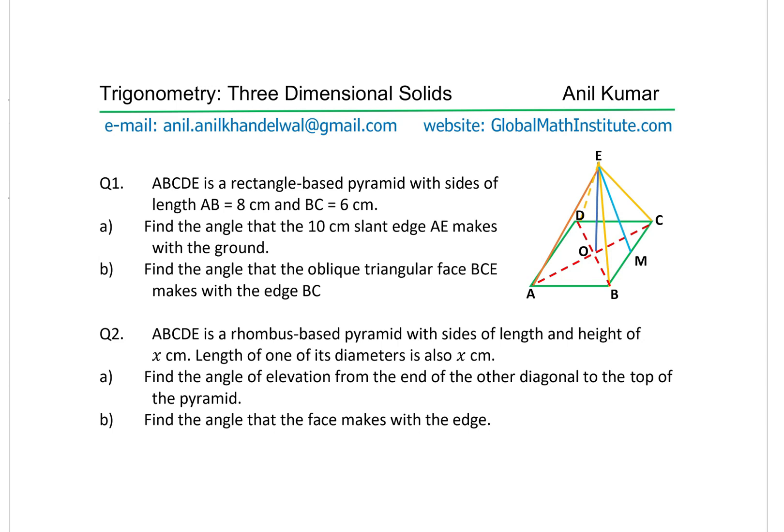Question number two: ABCDE is a rhombus-based pyramid with sides of length and height of X centimeters. The length of one of its diagonals is also X centimeters. Part A: find the angle of elevation from the end of the other diagonal to the top of the pyramid. Part B: find the angle that the face makes with the edge.